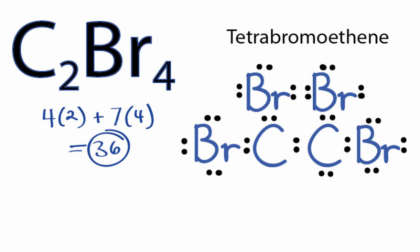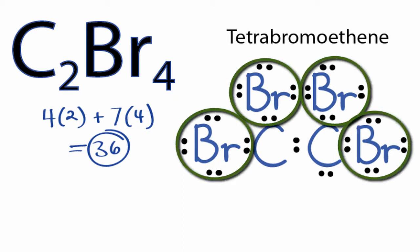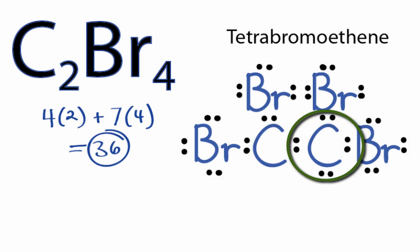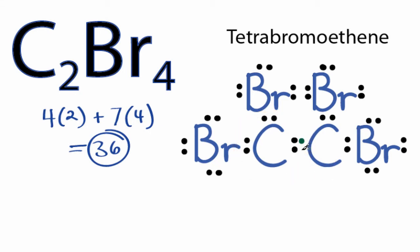You can see that all the bromine atoms have eight valence electrons, so their outer shells are full. The carbon on the right also has eight, but the carbon on the left only has six valence electrons. We can take these two valence electrons from that carbon and move them between the carbons to form a double bond.